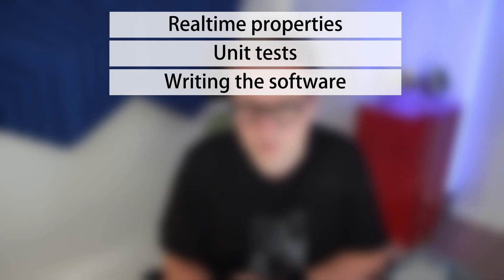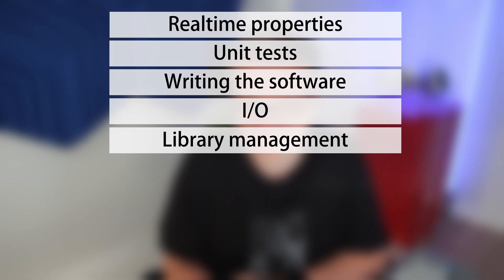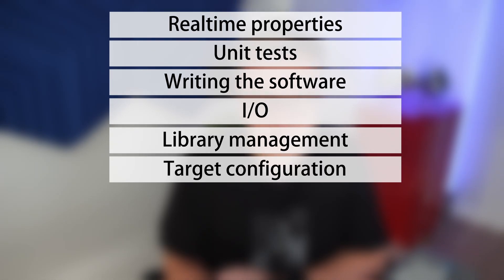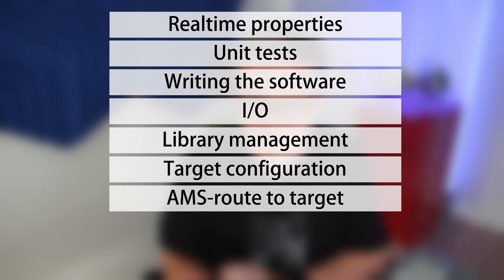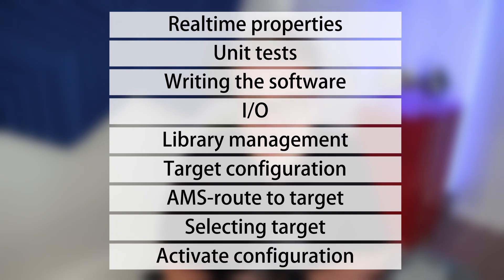When working with the development of TwinCAT software there are usually several steps involved to even create the most basic project and deploy it onto a target device. These steps include defining the real-time properties, writing unit tests, creation of POUs and business logic, defining inputs and outputs and linking them to POU instances, installing and referencing libraries, configuring the target, installing software such as setting IP addresses and the OPC UA server, creating an AMS route, selecting the target for deployment, and activating configuration.